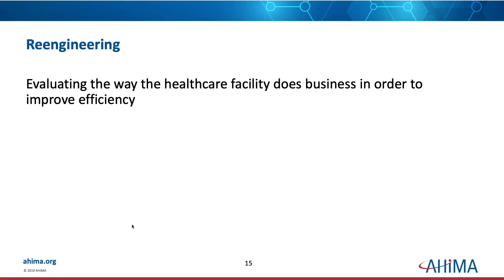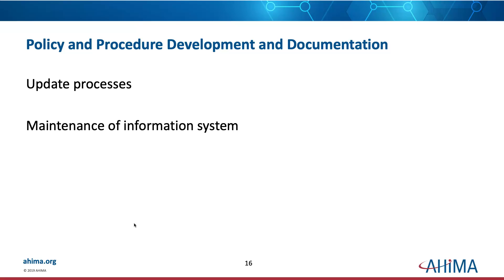Reengineering means evaluating the way you do your business in order to improve efficiency. Just because you've always done it the same way doesn't mean it needs to be done that way in the future, or that your new system will permit it. Sometimes reengineering happens because the system forces you into doing things differently — not necessarily a bad thing. You also need to develop your policies and procedures, decide if they need to be updated, made more consistent across the organization, and determine update processes, who will maintain the information system, and don't forget your IM plan for Joint Commission accreditation.